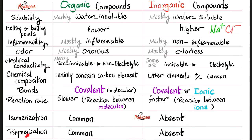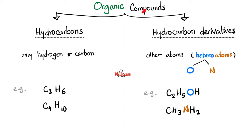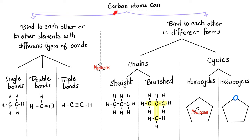Organic compounds could be hydrocarbons — only hydrogens and carbons. For example, two carbons and six hydrogens: that's a hydrocarbon. But we could also have heteroatoms — something else besides hydrogen and carbon, such as oxygen or nitrogen. Carbon is so versatile because carbon atoms can bind to one another or to other elements with single bonds, double bonds, or triple bonds. Carbon atoms can also bind in different forms: a straight chain, a branched chain, or a cyclic form.